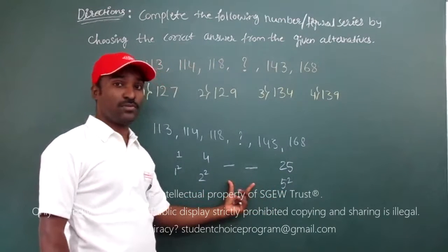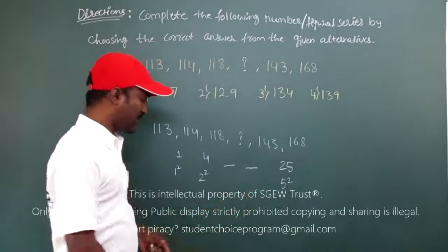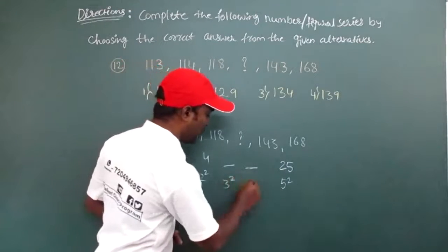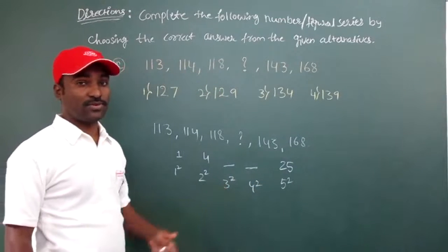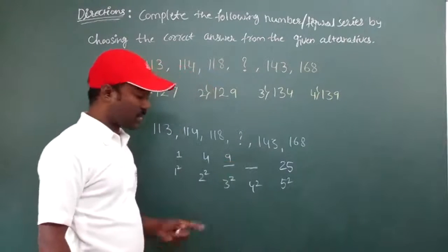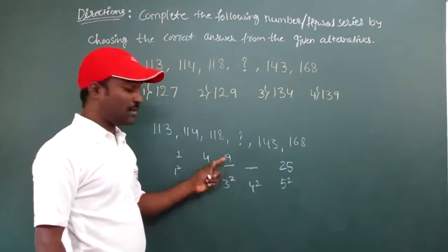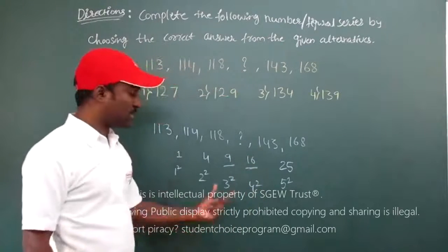Here I am missing with 2 numbers. They are 3 square, 4 square. Now, I will get 9 here because 3 square is 9. 4 square is 16. Now I got these numbers.